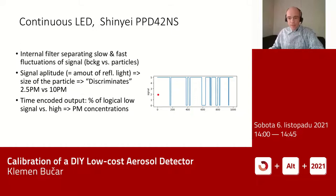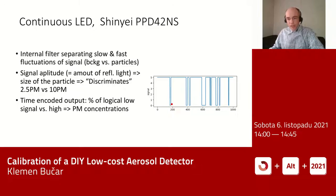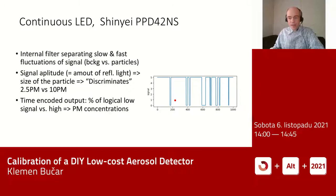The output of this sensor is binary — either logical zero or logical one, meaning zero or five volts. Whenever a particle is detected, the signal falls from high to low for a certain amount of time. The more light that is reflected, the longer the signal stays down. In our controller, we count the time the output is low versus the time it is high. The longer the output is low, the higher the aerosol concentration. We call this time-encoded output — the percent of logical low signal gives us the particulate matter concentration.